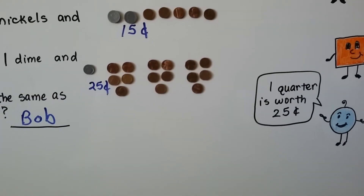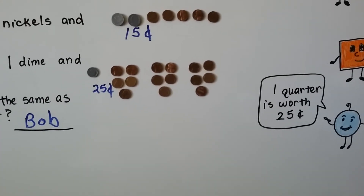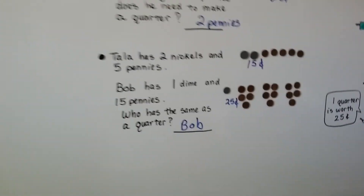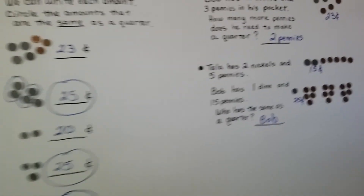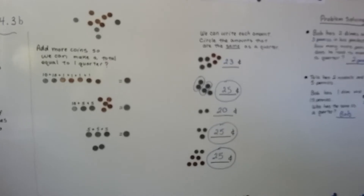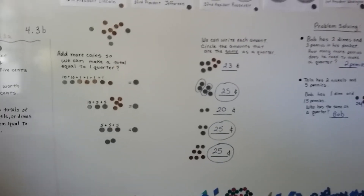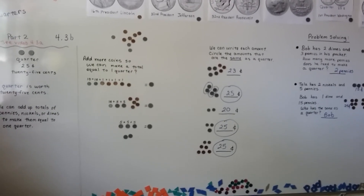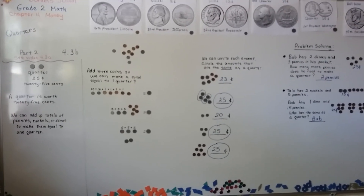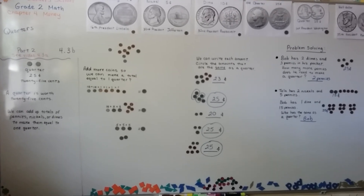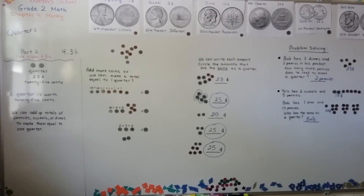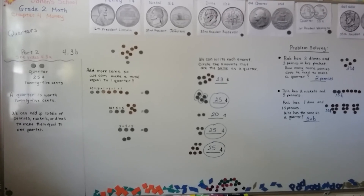One quarter is worth 25 cents. So see if you can get some pennies and nickels and dimes and put them into different combinations to see how many different ways you can make a quarter. It's good practice. I'll see you next video.